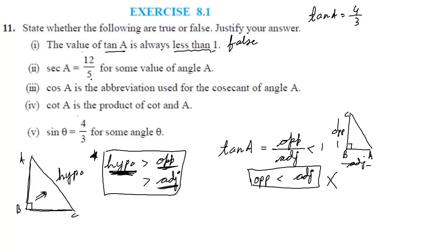Second is sec of A is 12 by 5 for some value of angle A. So sec what is the definition? Sec is reciprocal of cos. And for cos the definition is adjacent divided by hypotenuse. So this will become hypotenuse divided by adjacent. And this value is given to us in the question as 12 divided by 5. That means hypotenuse is 12, adjacent is 5.